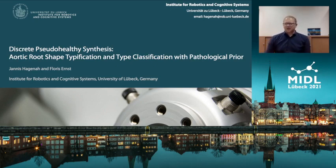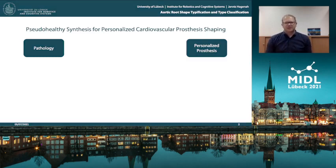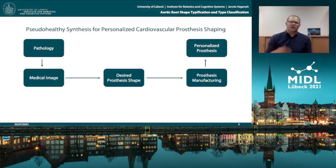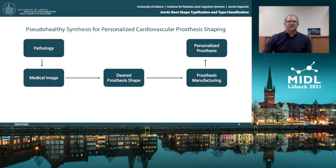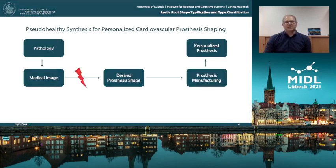Let's imagine a patient comes to the hospital with a specific pathology and we want to design a personalized prosthesis for him or her. The typical workflow looks like this: we acquire a medical image, we extract the desired prosthesis shape from it, we manufacture the prosthesis, and then it can be installed during surgery. However, such a naive approach is typically not possible because it's typically not possible to extract the desired prosthesis shape directly from the medical image.